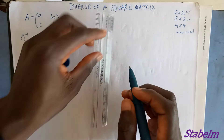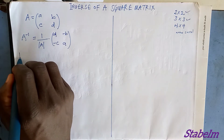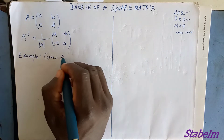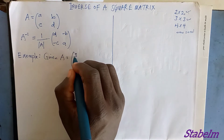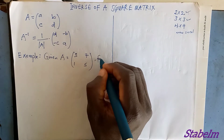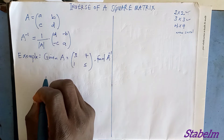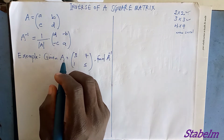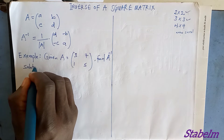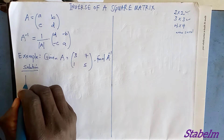That is how we find the inverse of a 2x2 matrix. Now let's look at this example: given matrix A equals [3, 7; 1, 5], find A inverse. First of all, we need to get the determinant of A.